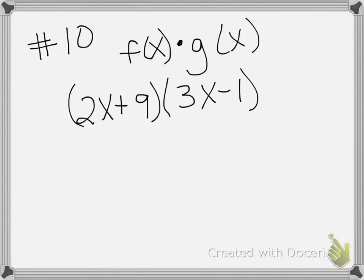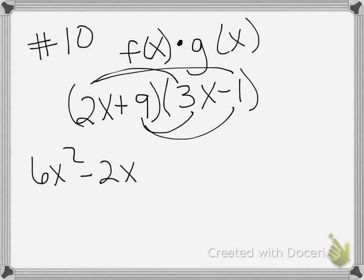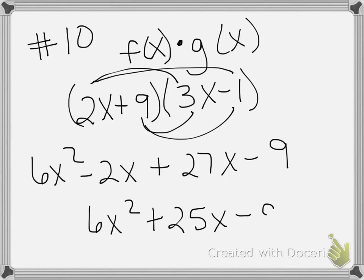The next problem is number 10. You are multiplying the functions f(x) and g(x). f(x) is 2x plus 9, g(x) is 3x minus 1. When you multiply them you're going to have to use FOIL. So this is 6x squared minus 2x plus 27x minus 9. Combine your like terms. So it's 6x squared plus 25x minus 9 is your answer.